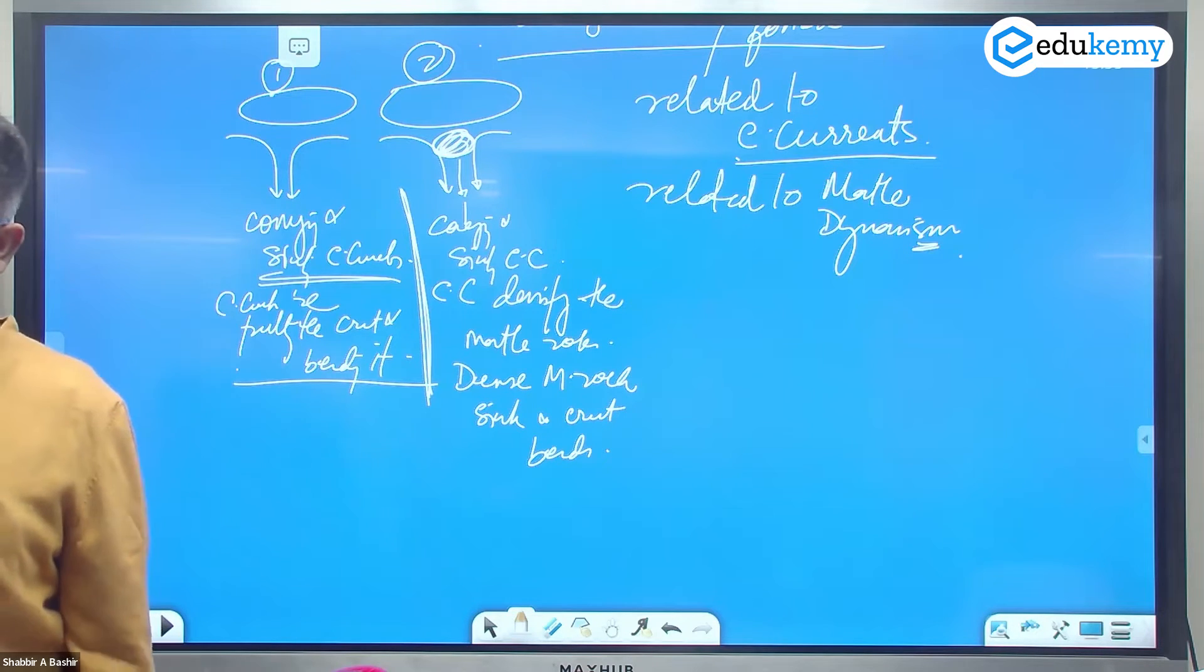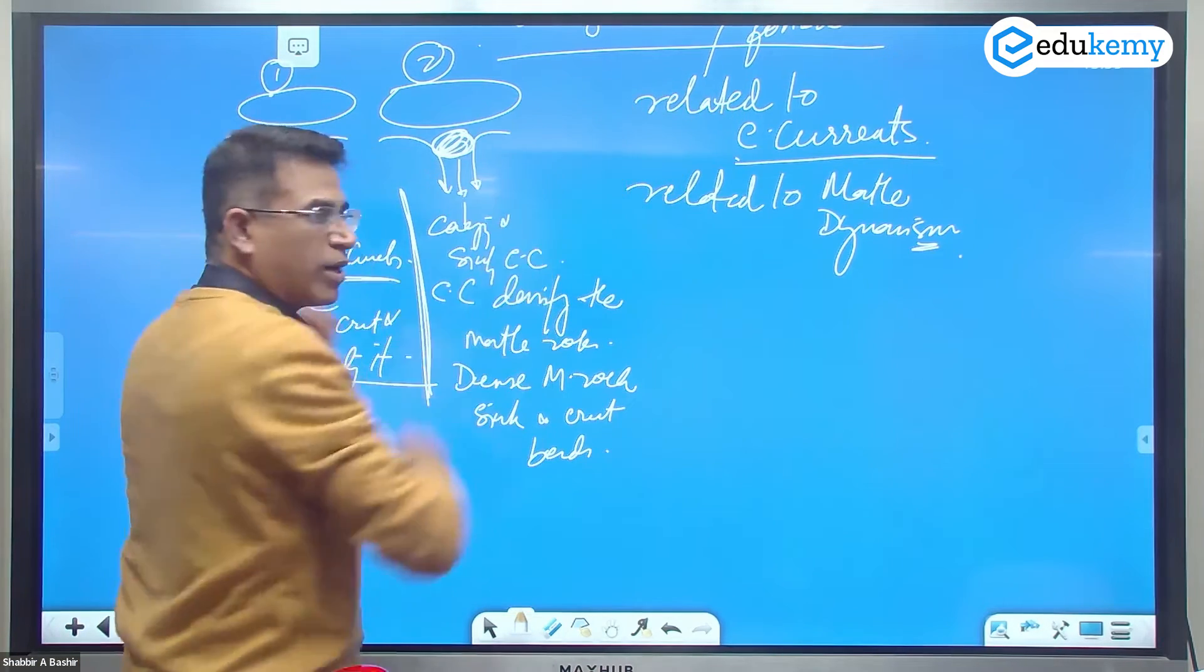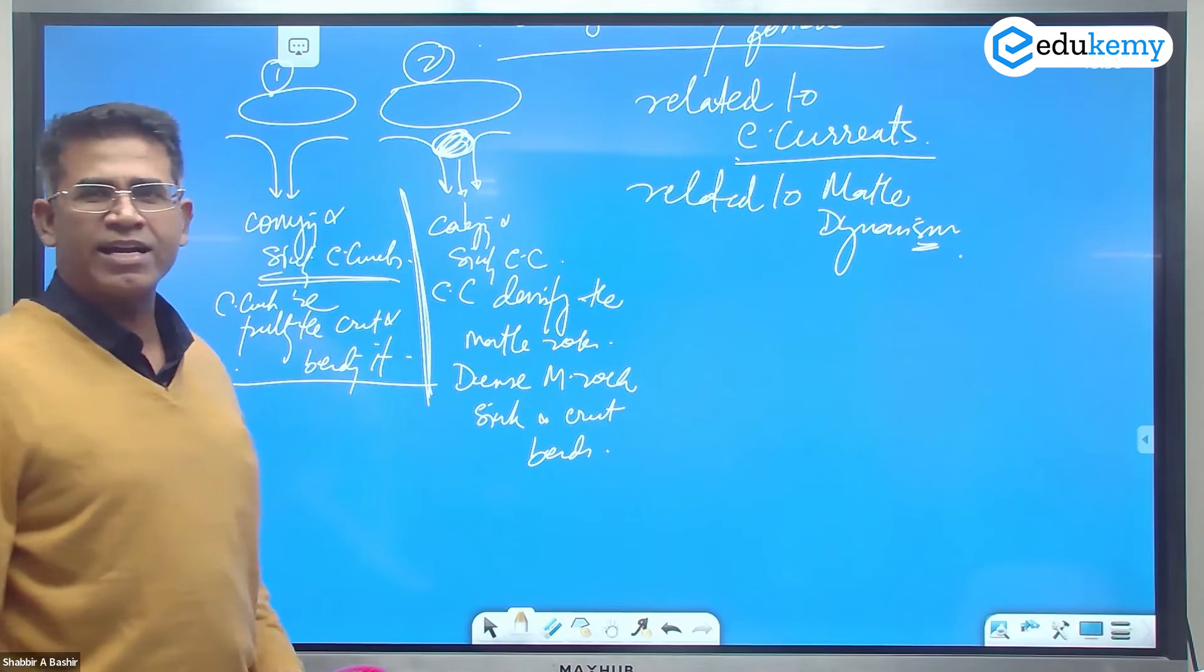In fact, the biggest mistake is the convection currents merge. It will be so hot that it will melt. It will not densify.